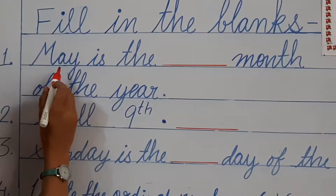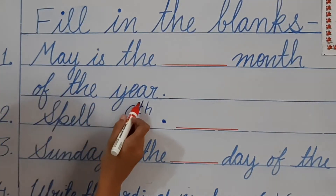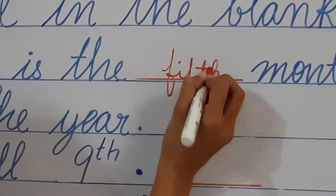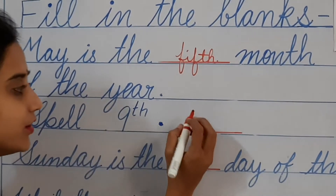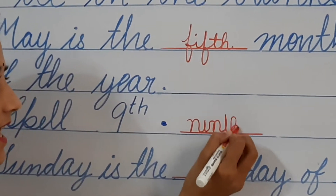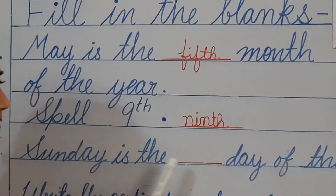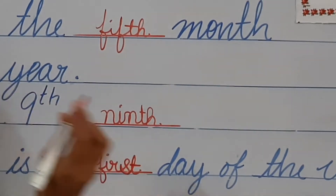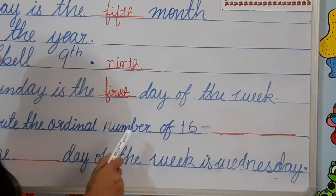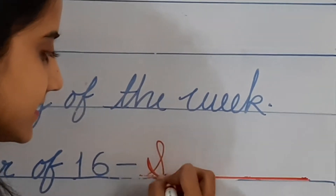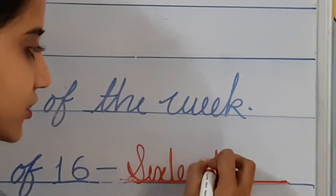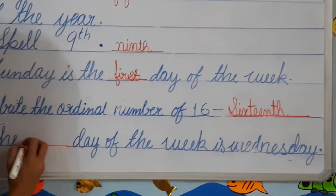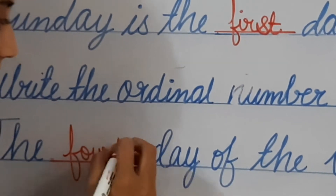Number 1: May is the dash month of the year. Count children — May is the 5th month of the year. Next, spell 9th: N-I-N-T-H, 9th. Next question: Sunday is the dash day of the week — Sunday is the first day of the week. Next, write the ordinal number of 16th: S-I-X-T-E-E-N-T-H, 16th. Next question: the dash day of the week is Wednesday — the 4th day of the week is Wednesday.